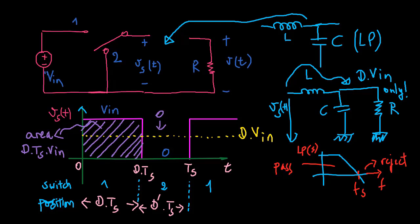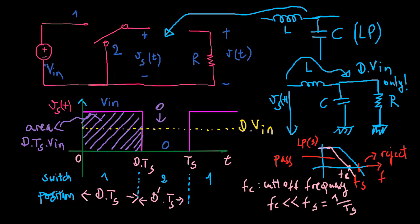To accomplish this, we design a filter such that its cutoff frequency is much lower than the switching frequency. The output voltage V is then essentially equal to the DC component of VS.